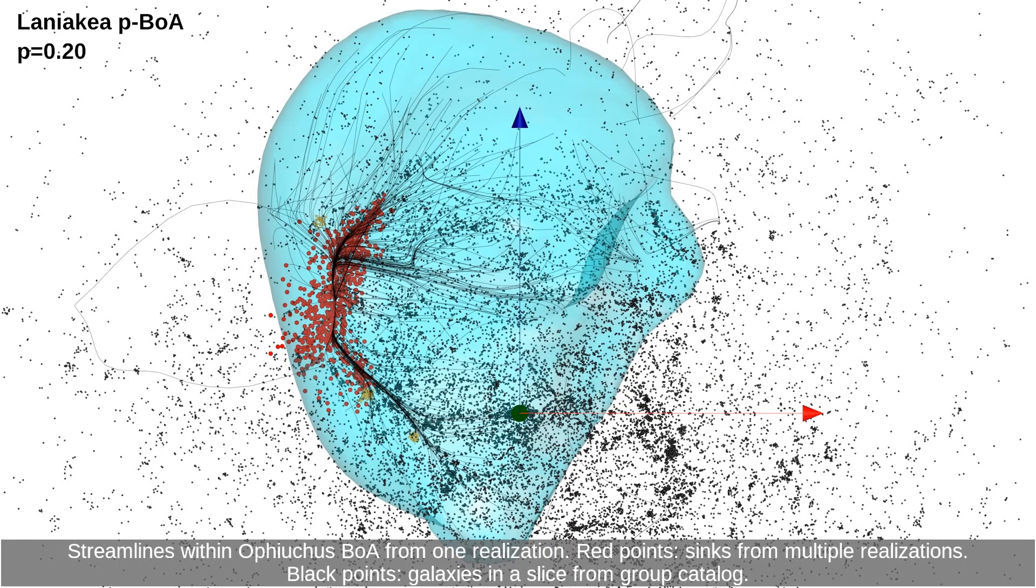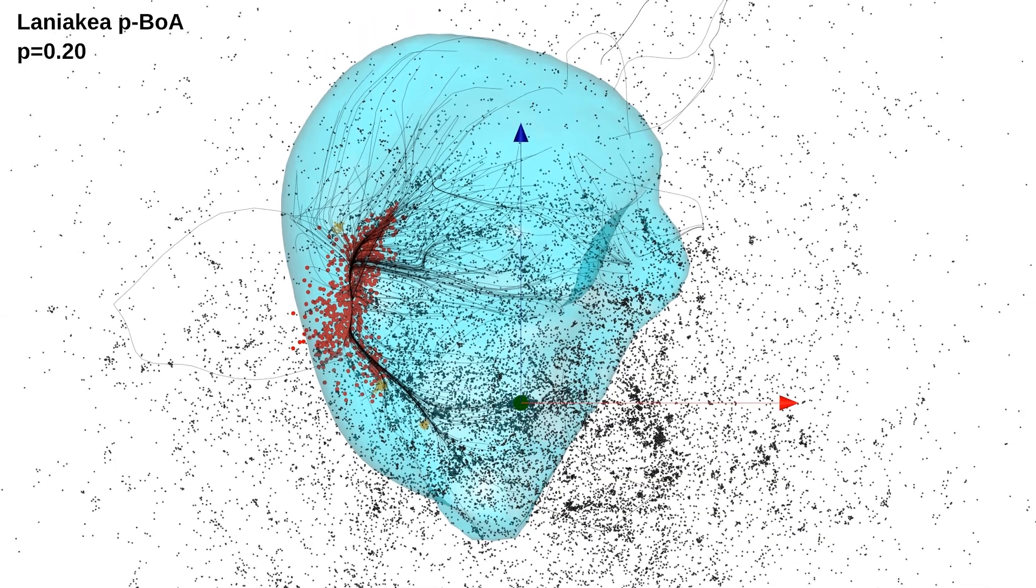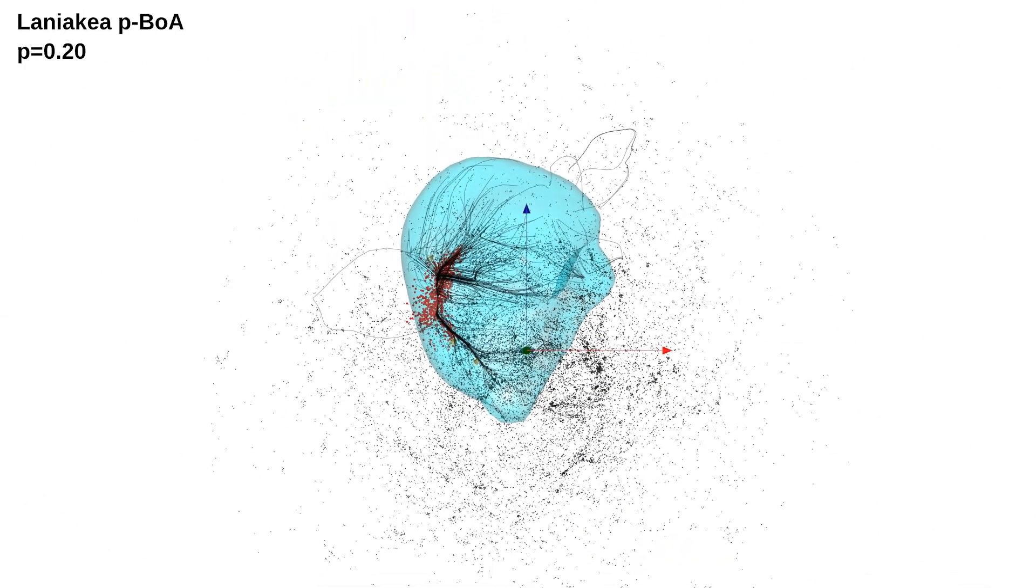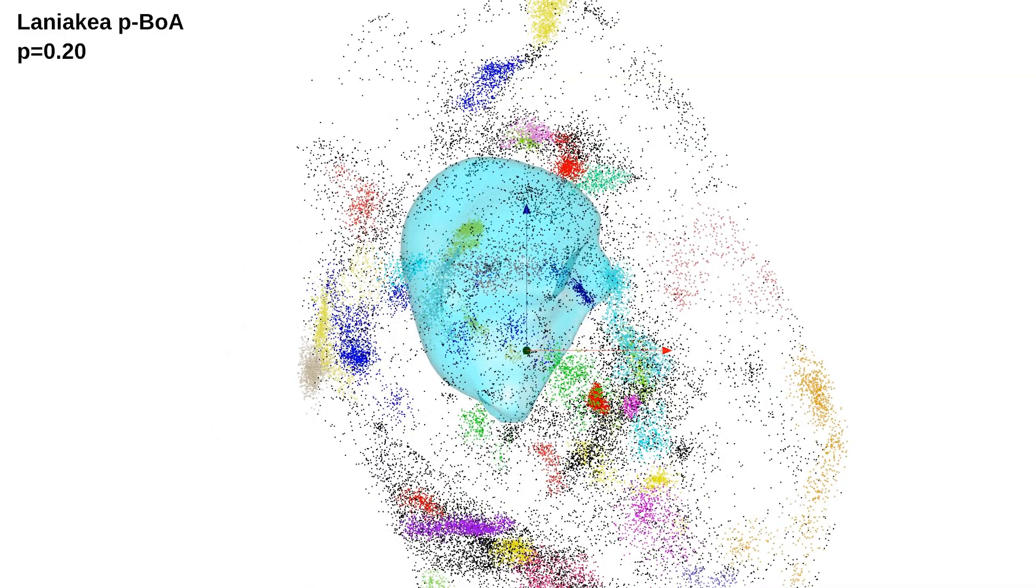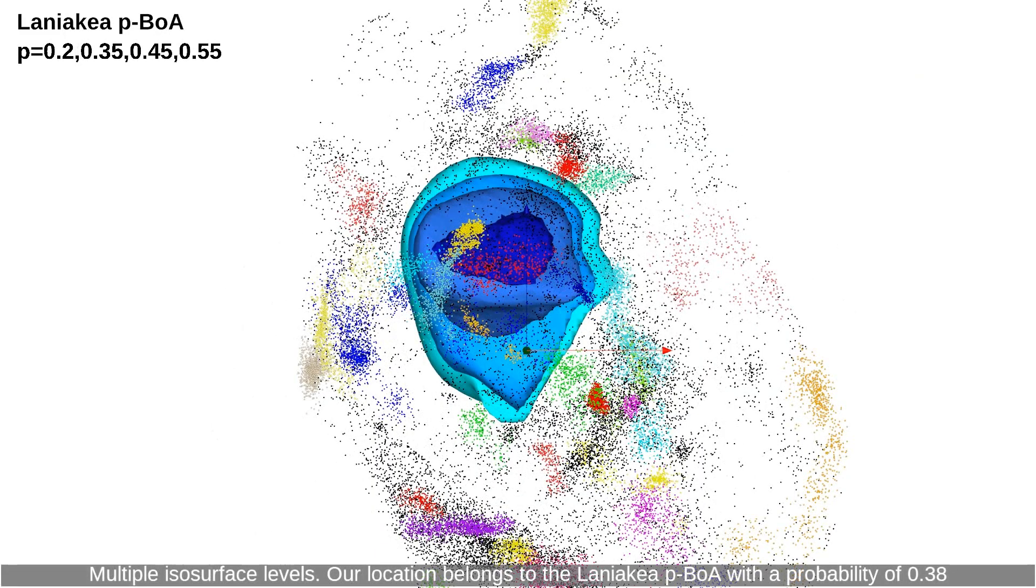Streamlines within Ophiocos BOA from one realization. Red points: sinks from multiple realizations. Black points: galaxies in a slice from group catalog. Multiple isosurface levels. Our location belongs to the Laniakea PBOA with a probability of 0.38.